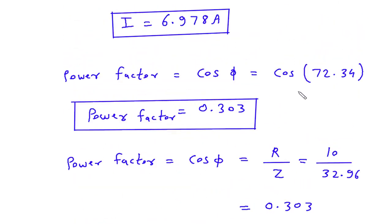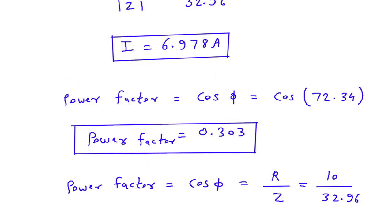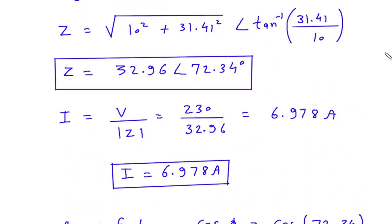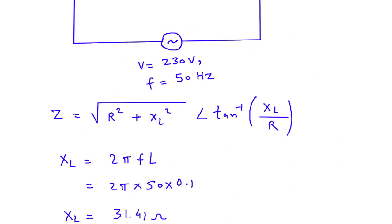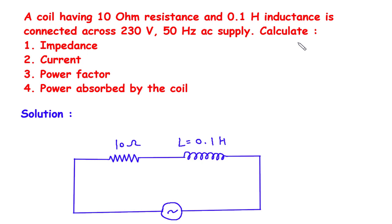To summarize: power is 486.29 Watts, power factor is 0.303, current is 6.978 amperes, and impedance is 32.96 Ohms. If you find this video helpful, feel free to donate whatever amount you can. Link is in the description below. Thank you.